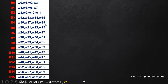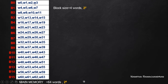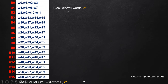Next, from the diagram it is clear that all these memory words are grouped to form different memory blocks. Here the block size is assumed as 4 words. So the total 64 different memory words are grouped to form different memory blocks, each with a block size of 4 words.